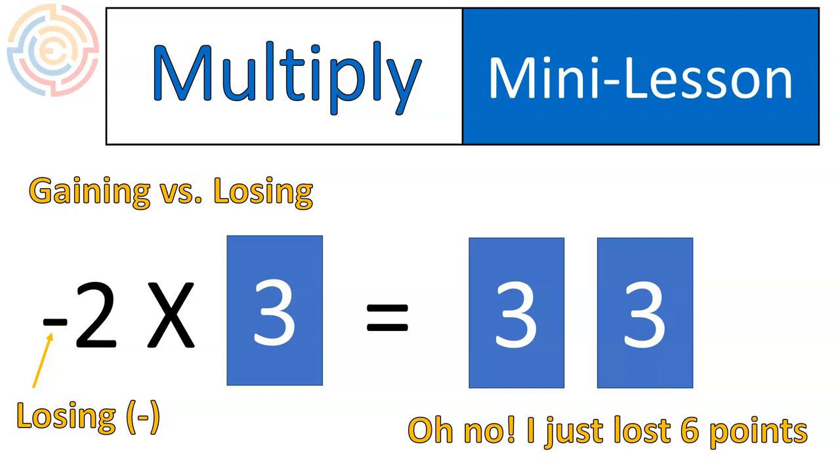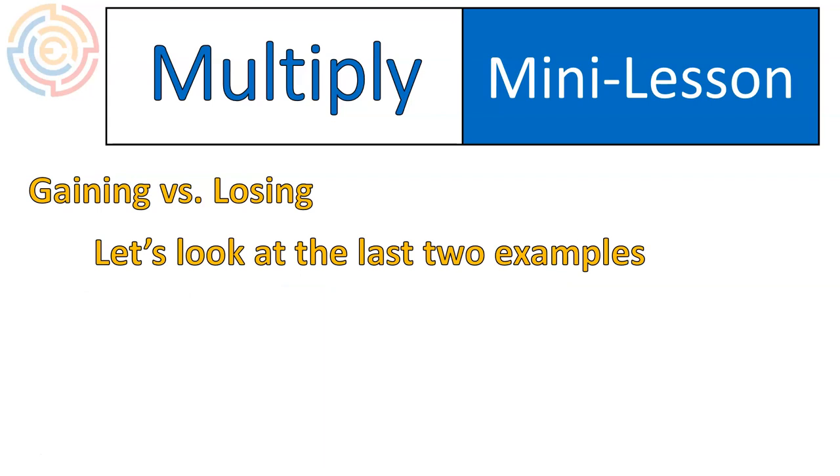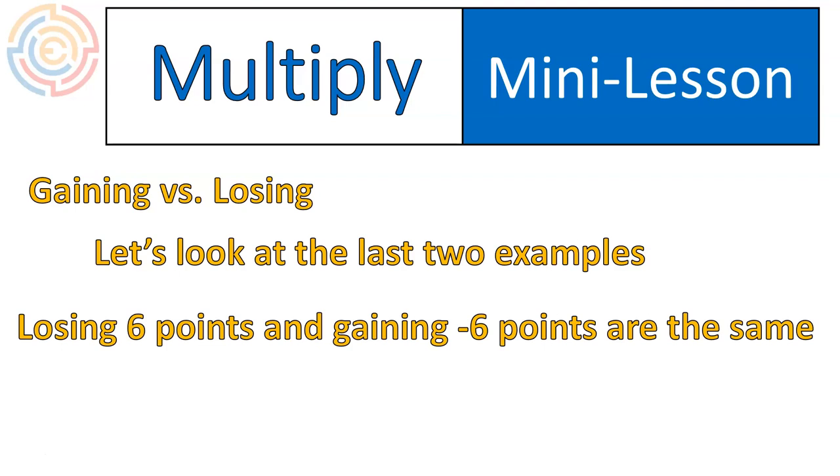Now I want us to focus for just a minute here on these two examples before we move on. The last two examples showed the same exact thing. It said losing 6 points or gaining negative 6 points is the same. Those are the two examples, right? We had 2 times negative 3 and negative 2 times positive 3. And both of them ended up giving us the same thing. We ended up losing 6 points. Whether we were giving away positive points or whether we were gaining some negative cards, both cases were losing in the end. I hope that example helps to make sense there. We have to understand those concepts of gaining and losing and negative points for this next example to make sense.